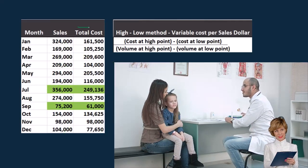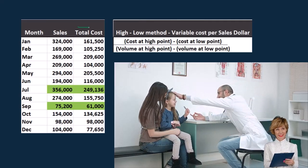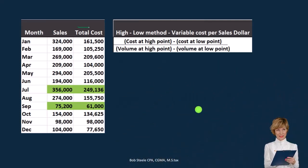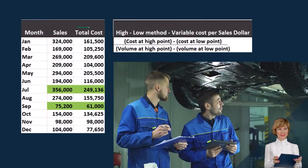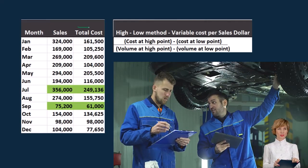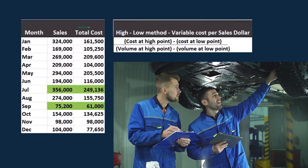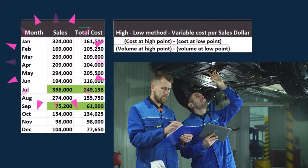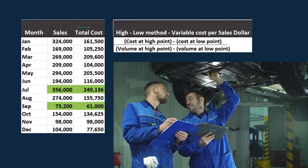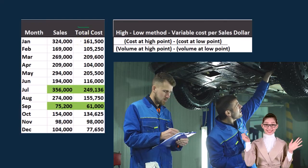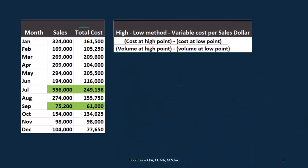In an ideal world we would know exactly which costs are variable and which are fixed, but in reality there are a lot of costs where we don't know exactly what the variable or fixed portion is. We still really want to use variable cost and fixed cost in order to make projections, so we try to figure out what the estimated variable portion and fixed portion would be on a cost. We can use the high-low method in order to do that and break out those two portions of total cost.